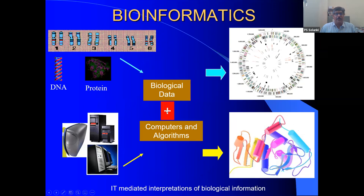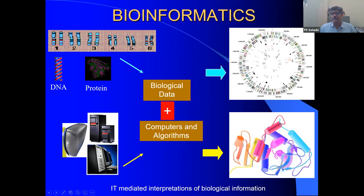From raw information like sequences of DNA, RNA, or protein, or the structure of a protein, we try to interpret results in a meaningful way. We extract knowledge, plot things — the circles shown use color coding where different kinds of information can be interpreted from raw data. This is what bioinformatics is all about: using computers, algorithms, and biological data to analyze.